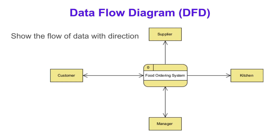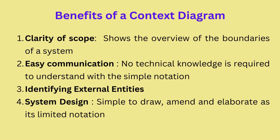There are multiple levels of DFDs. Here I've shown the Level 0, also called the Context DFD. The example I've taken is a food ordering system. At Level 0, there is only one visible process node representing the functions of the complete system in terms of how it interacts with external entities. A context DFD is a visual representation that illustrates the scope and boundaries of a system, depicting how it interacts with external entities.